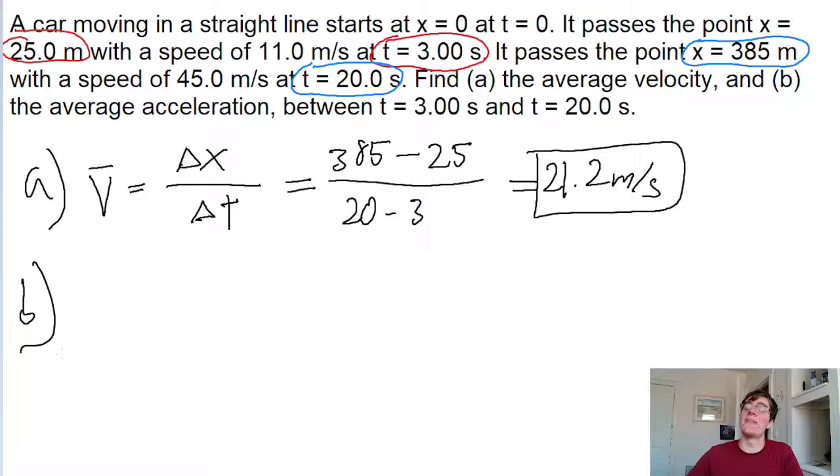Now part B asks for the average acceleration. Average acceleration has a very similar formula: the change in velocity divided by the change in time. So now we're only looking at the initial and final velocities.